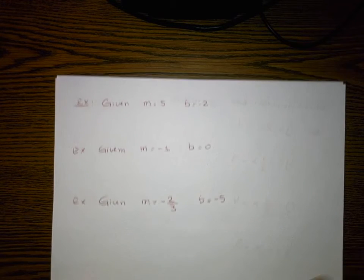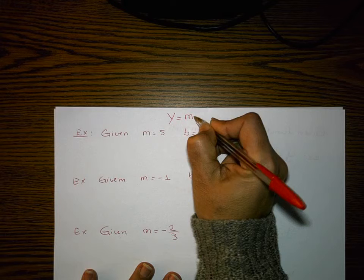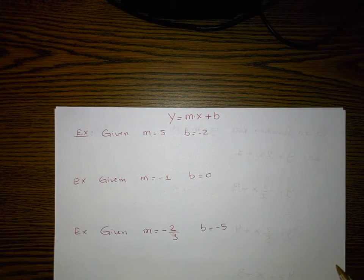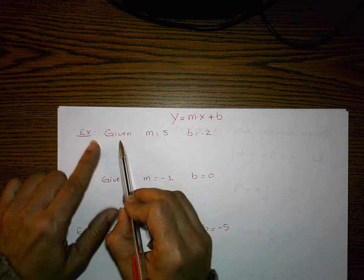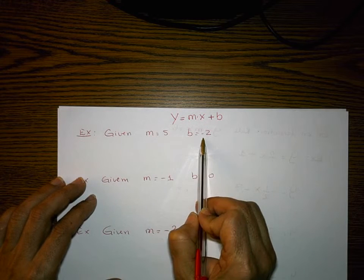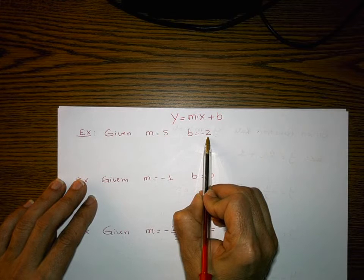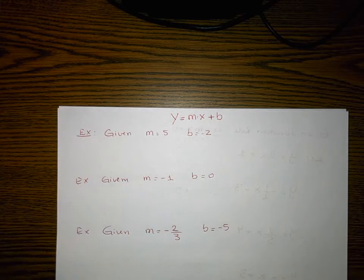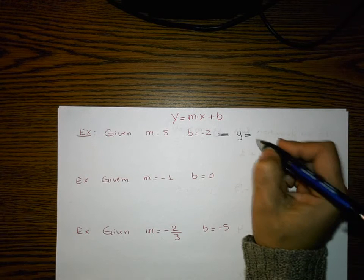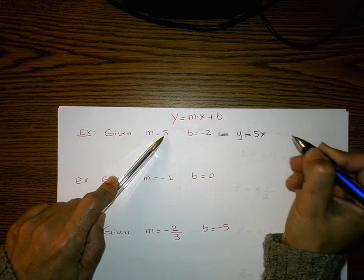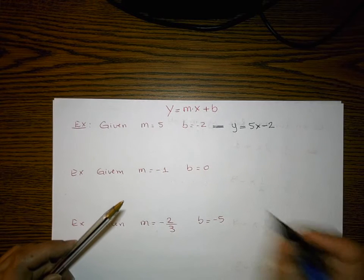I wrote a few examples and I'm always going to refer to our equation, the slope y-intercept form: y equals m times x plus b. The b can be positive, negative, or zero. This is the easier case when they give us the slope and they give us the y-intercept — you're just replacing m with five and b with negative two. So the answer is y equals 5x minus 2.